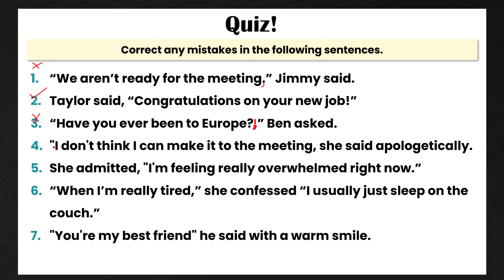Number four is incorrect. We have the opening quotation mark and 'I don't think I can make it to the meeting,' but we're missing the closing quotation mark, which comes after the comma. Remember: comma, closing quotation mark, then a space before 'she.'